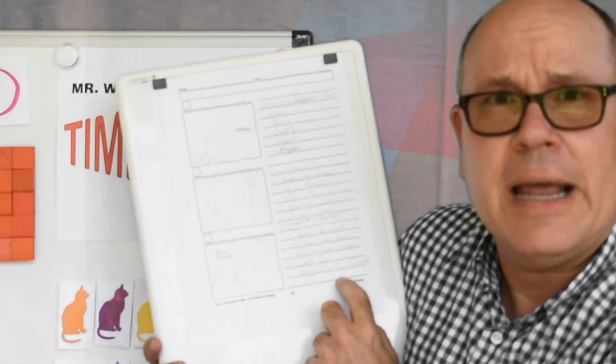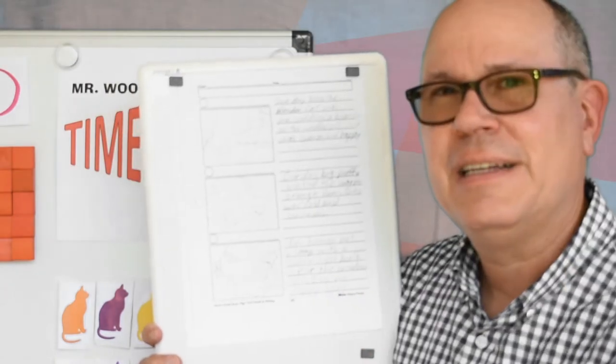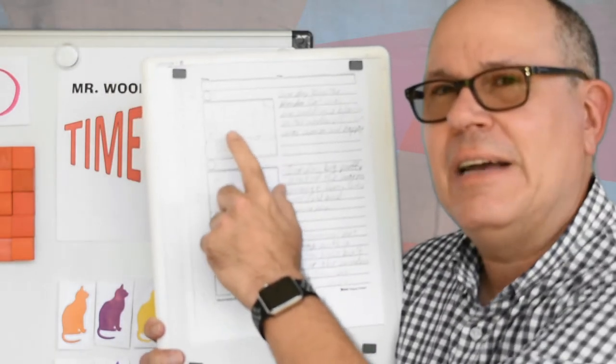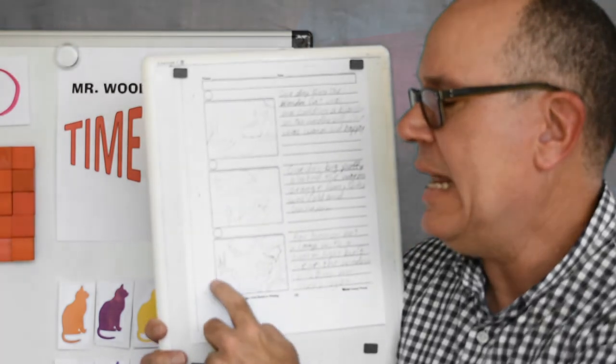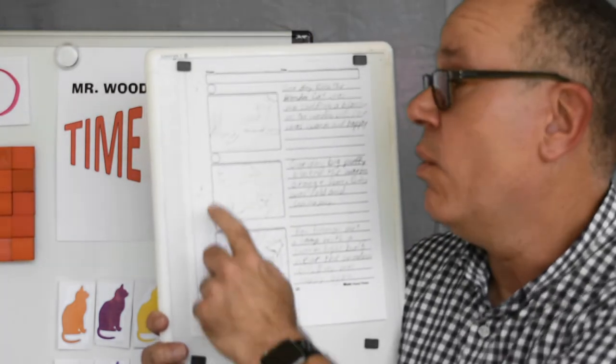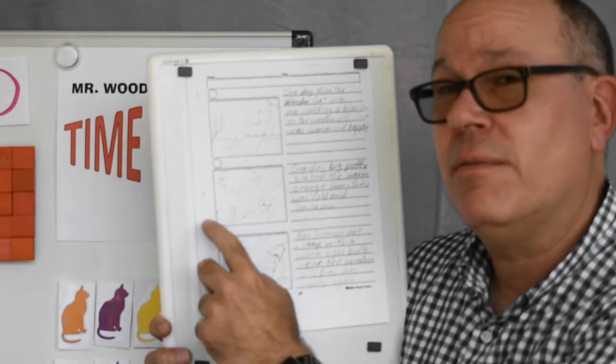Next, we're going to write the narrative. Alright artists, here's my narrative. I have a beginning, a middle, and an end. Or it could be a beginning, a problem, and solution.